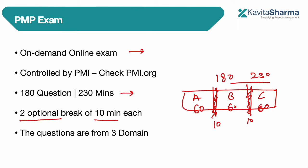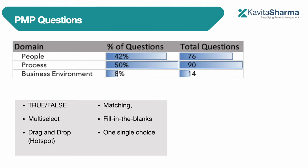The questions come from three domains. First is People — how do you manage and enable people, how do you communicate — which makes up 42% of questions, so around 76 questions. Process contributes 50%, so 90 questions. Business Environment is 8%, covering things like how you handle changes, why a project takes place, enterprise environmental factors. Process domain covers things like collecting requirements and creating a schedule.